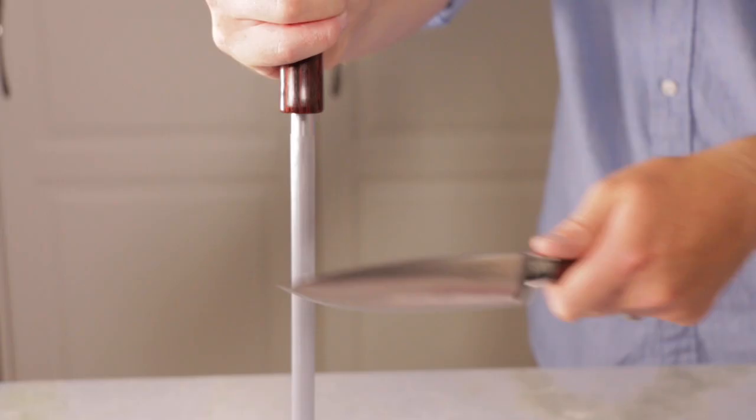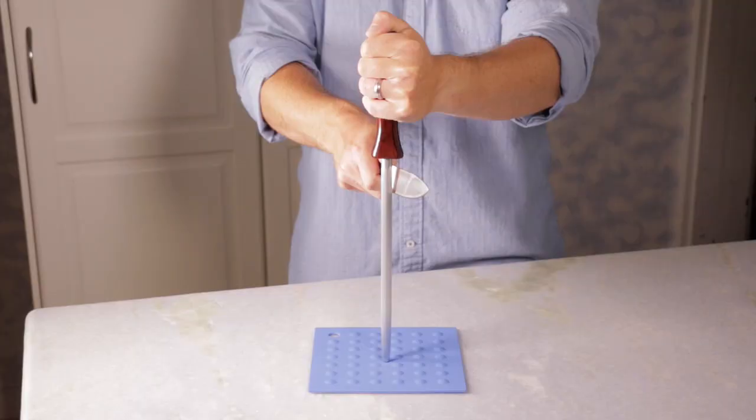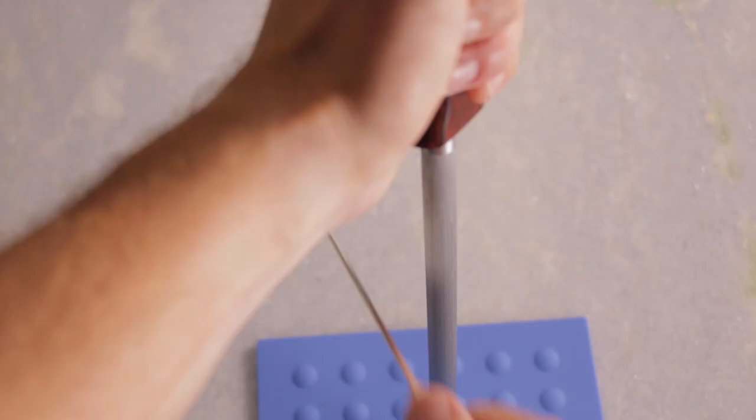Push the knife down the steel while also pulling it horizontally from heel to tip. Repeat on each side 8 to 12 times.